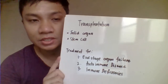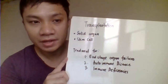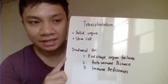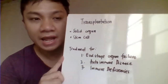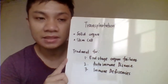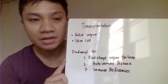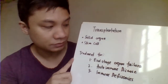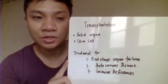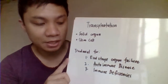Solid organ transplantation is the transplantation of different organs of the body, like your cornea, kidney, lungs, heart, and many others. You could also have stem cell transplantation. But in our discussion, we'll be discussing only the solid organ transplantation.